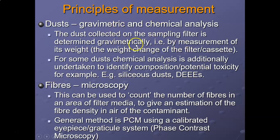For dust-type sampling, gravimetric analysis is used. Basically, the filter and cassette are weighed before a worker puts on the device. At the end of eight hours, they are weighed again. The difference in the weight of the filter gives an idea of the concentration of dust that the worker was exposed to over the eight-hour period.